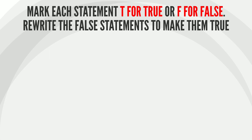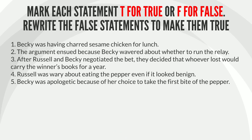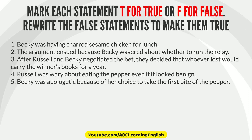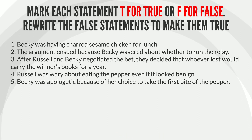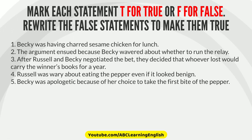Bonus. Mark each statement T for true or F for false. Rewrite the false statements to make them true. 1. Becky was having charred sesame chicken for lunch. 2. The argument ensued because Becky wavered about whether to run the relay. 3. After Russell and Becky negotiated the bet, they decided that whoever lost would carry the winner's books for a year. 4. Russell was wary about eating the pepper, even if it looked benign. 5. Becky was apologetic because of her choice to take the first bite of the pepper.